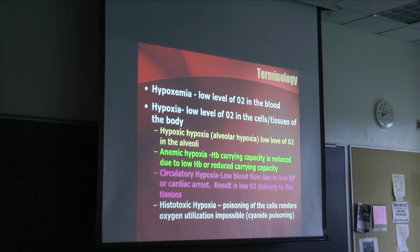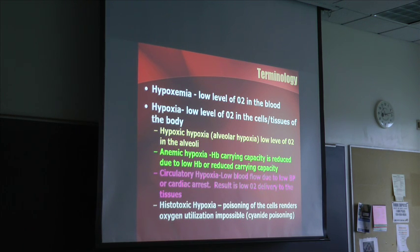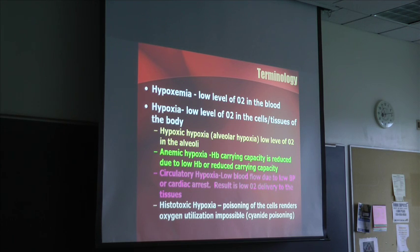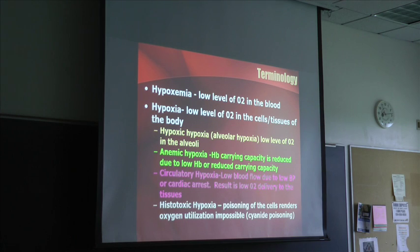Anemic hypoxia is when the hemoglobin carrying capacity is reduced, either due to low hemoglobin or a reduced carrying capacity. Reduced carrying capacity means there is something wrong with the hemoglobin and it cannot carry oxygen. For example, sickle cell anemia — when the cells sickle, they can't carry oxygen. That would be an example of anemic hypoxia.